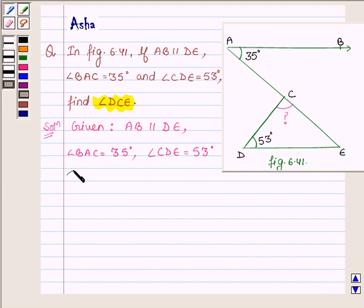And we have to find angle DCE. Now since AB is parallel to DE and AC be the transversal,